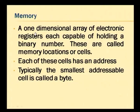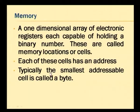Now a little bit on each of these modules. First, let us look at memory. Memory is normally viewed as a one-dimensional array of electronic registers, each capable of holding a binary number — these are called memory locations or cells. Each cell has an address, and typically the smallest addressable cell is called a byte, which is an 8-bit number. So 8 bits together is treated as one cell, and each cell has an address.